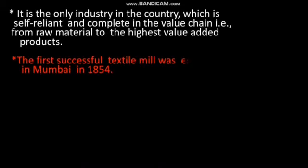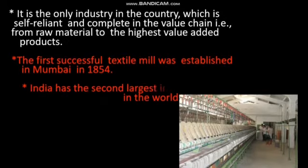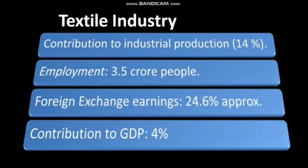The first successful textile mill was established in Mumbai in 1854. India has the largest installed capacity of spindles in the world with 43.13 million spindles, after China. The textile industry contributes 14% to industrial production and approximately 3.5 crore people are directly employed in the industry.